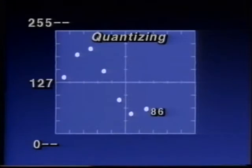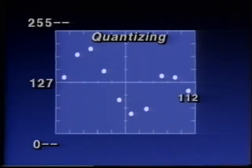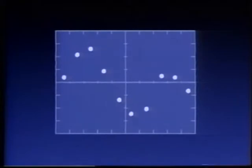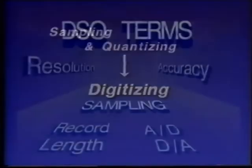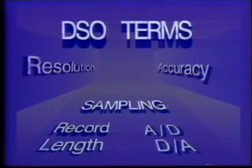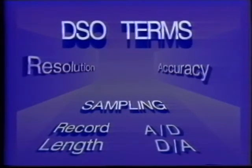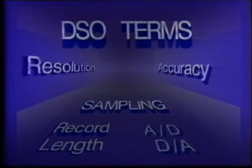In a related process called quantizing, an analog-to-digital converter transforms these samples into numbers. These numbers are stored in the DSO's memory in what's called binary format. Both sampling and quantizing are basic processes of digitizing. The faithful reproduction of the input signal by the DSO depends on two key factors: resolution and accuracy.